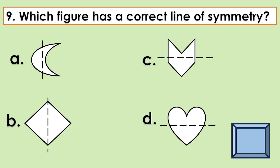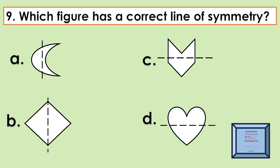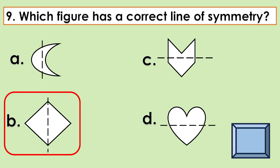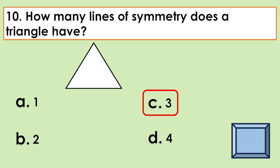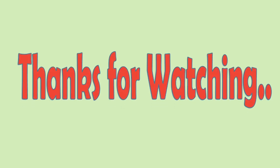Number nine: which figure has a correct line of symmetry? The answer is letter B. Number ten: how many lines of symmetry does a triangle have? The answer is letter C. That's all for now.